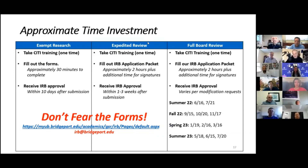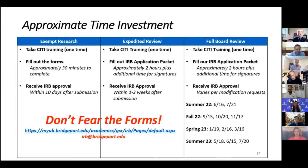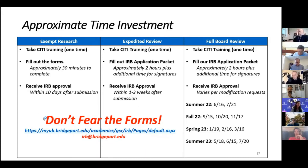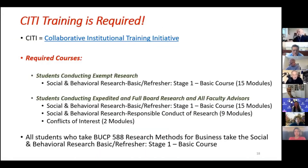For a full board review, you still have to take CITI training and fill out the IRB application packet — about two hours plus additional time for signatures. Your IRB approval will vary depending upon what the IRB asks you for. Full board reviews are on exception, so if you're in a full board review, you do expect an iterative process. Students conducting exempt research need to take Social and Behavioral Research Basic course. Faculty and any students conducting expedited or full board research need to take three courses.